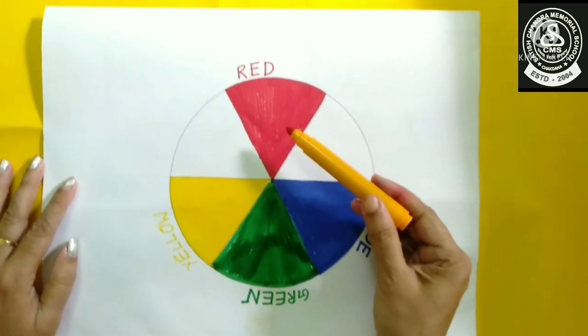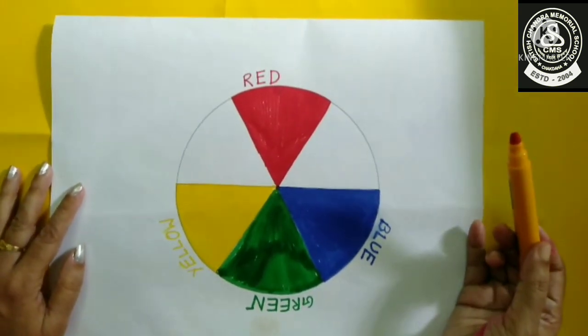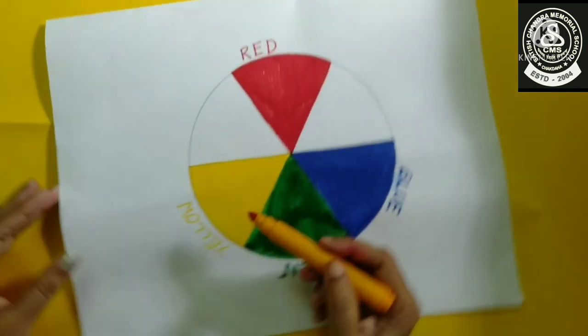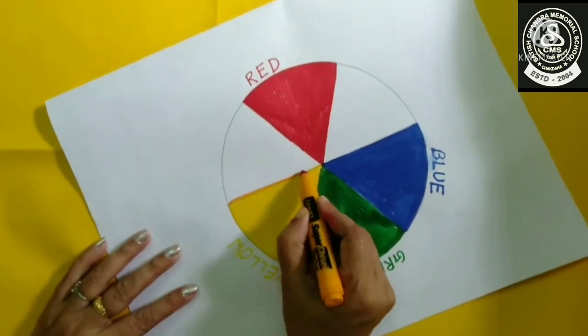So if you mix yellow and red you will get orange, and orange is another secondary color.